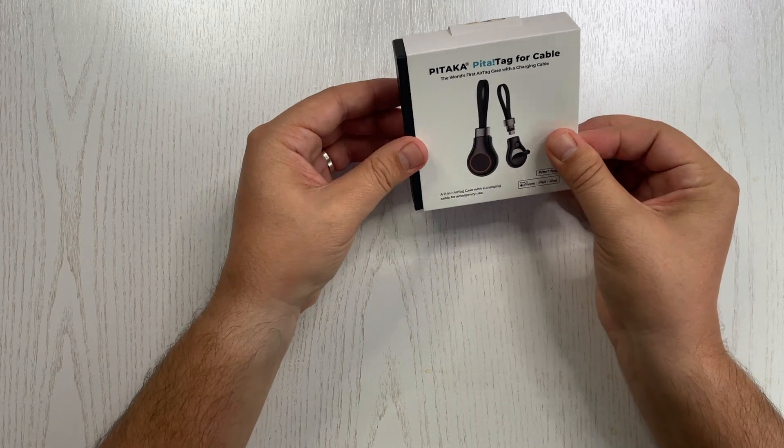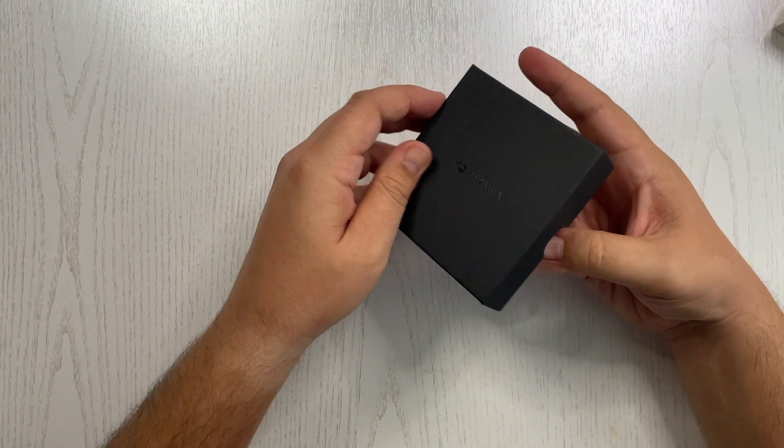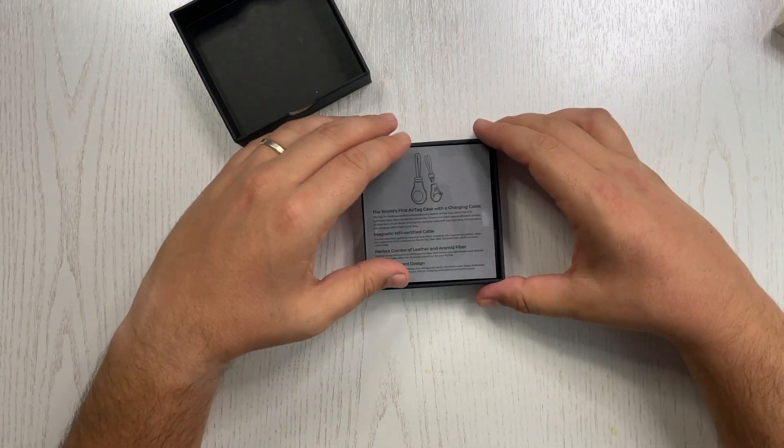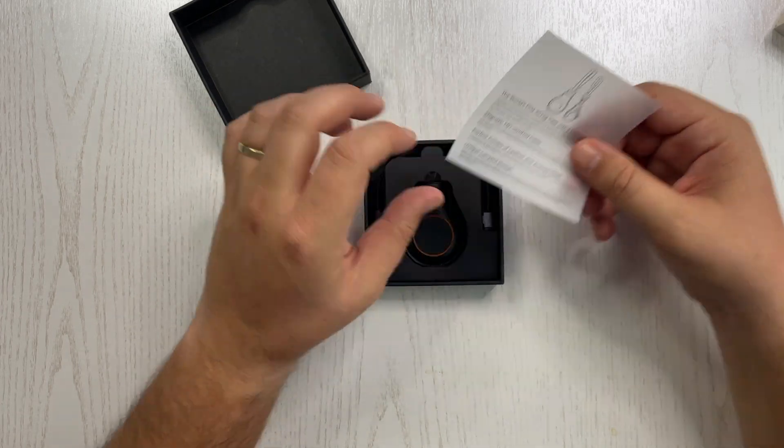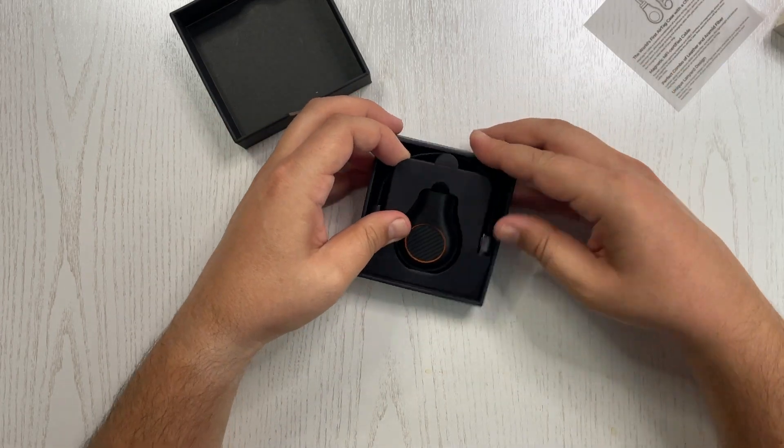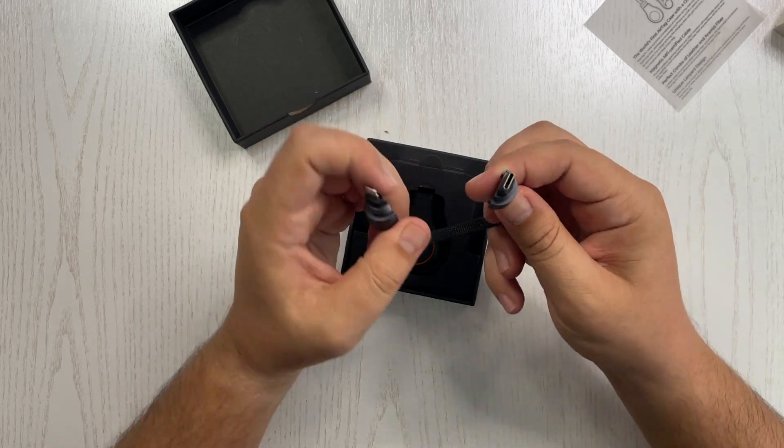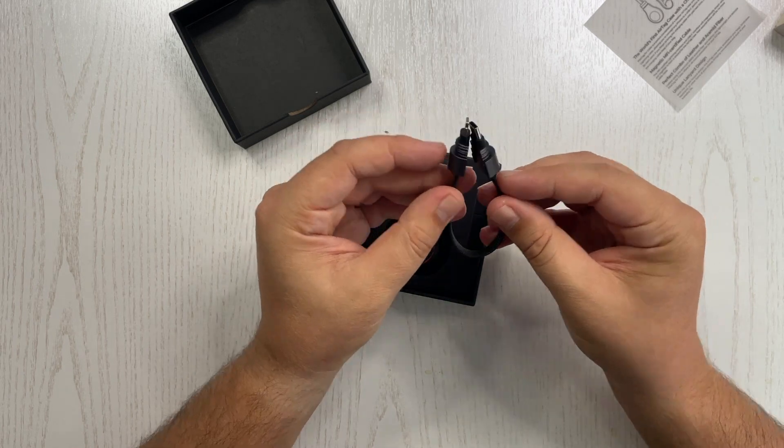So the box is pretty minimalistic. And inside we have a note with what you expect from the box. Then we have the USB-C to lightning cable, and it's also magnetic.